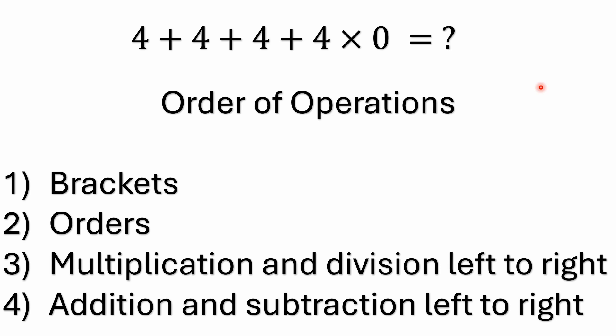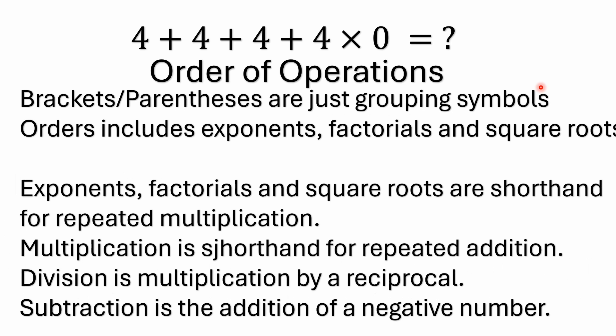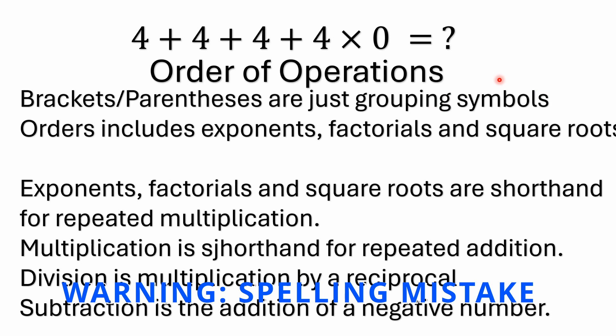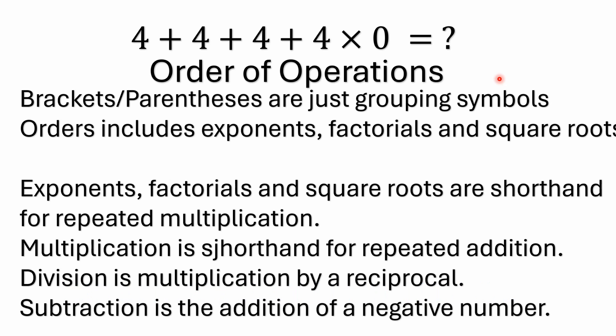You still have multiplication and division solved left to right, and addition and subtraction solved left to right. Now remember, brackets or parentheses — whichever you're using — are just grouping symbols. They're telling us to solve everything inside those brackets or parentheses according to the order of operations. And then you have exponents, factorials, and square roots — those are all shorthand for repeated multiplication, so things like exponents have higher precedence than your multiplication and division.